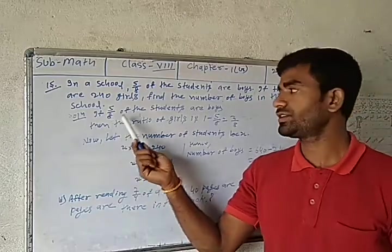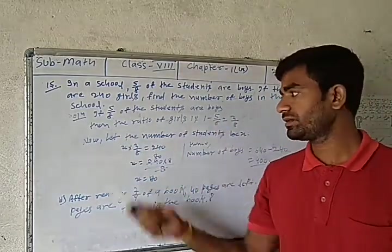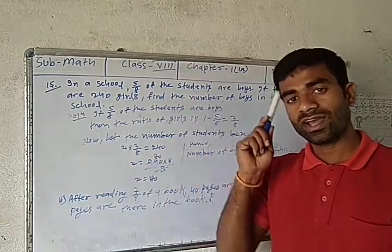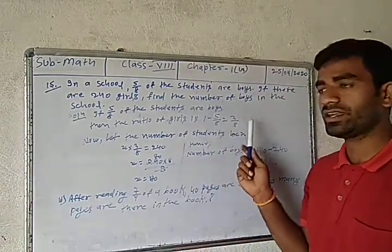If 5/8 of the students are boys, then the ratio of girls is 1 - 5/8 = 3/8.